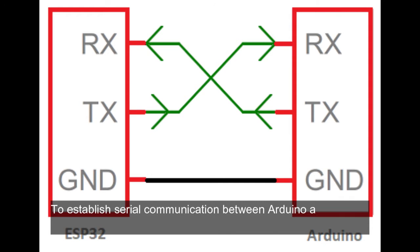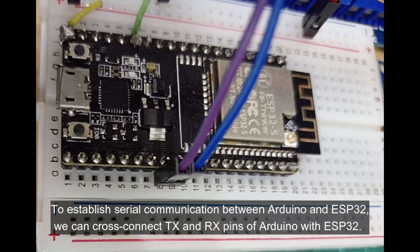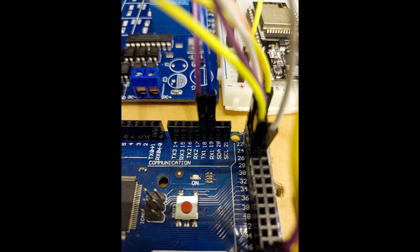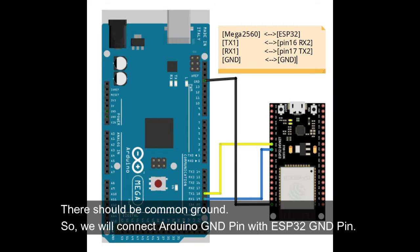To establish serial communication between Arduino and ESP32, we can cross-connect the TX and RX pins of Arduino with ESP32. There should be a common ground, so we will connect the Arduino GND pin with the ESP32 GND pin.